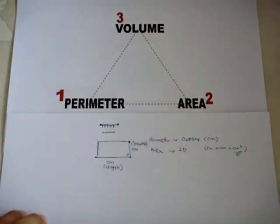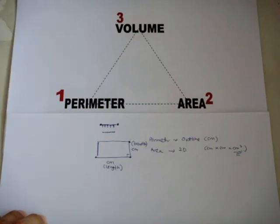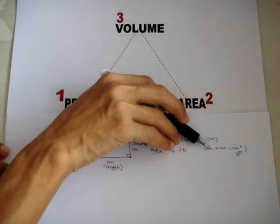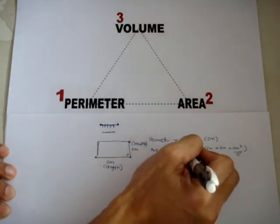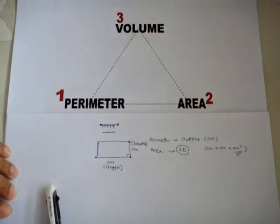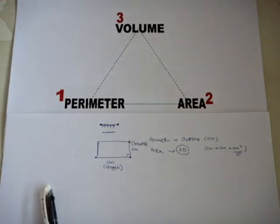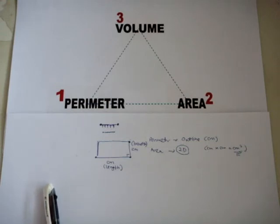Therefore, based on the formula's unit alone, we can tell whether a particular formula is for area, volume, or perimeter. CM × CM = CM². Area is simply a 2D measurement. What exactly is 2D? It's totally related to us — our shadow is 2D.